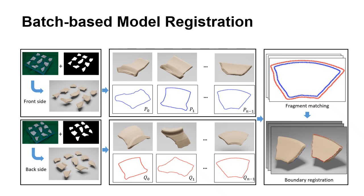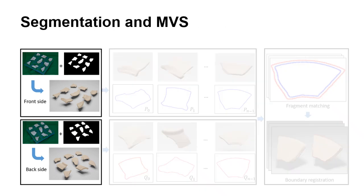With these captured images, our method can automatically reconstruct the 3D models of the fragments. We first perform MVS to get the 3D models of two sides, where the background is removed to accelerate the efficiency by image segmentation.